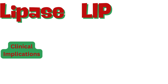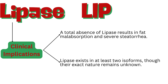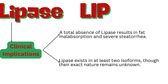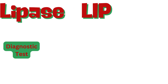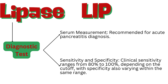Lipase plays a crucial role in the body, and its absence can lead to significant health issues. A total absence of lipase results in fat malabsorption and severe steatorrhea. Lipase exists in at least two isoforms, though their exact nature remains unknown. Lipase measurement is important for diagnosing acute pancreatitis, with clinical sensitivity ranging from 80% to 100% depending on the cutoff, and specificity varying within the same range.